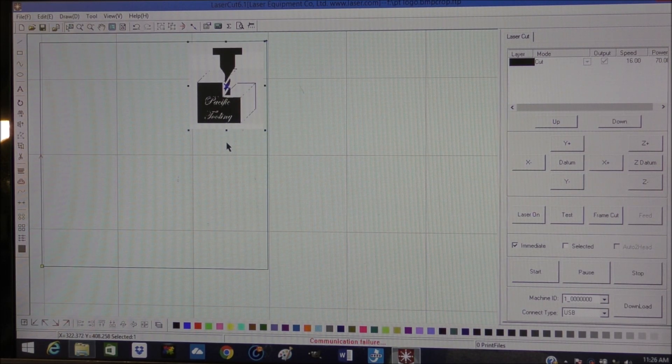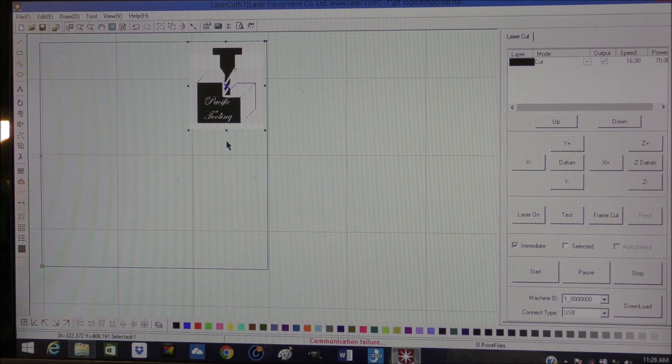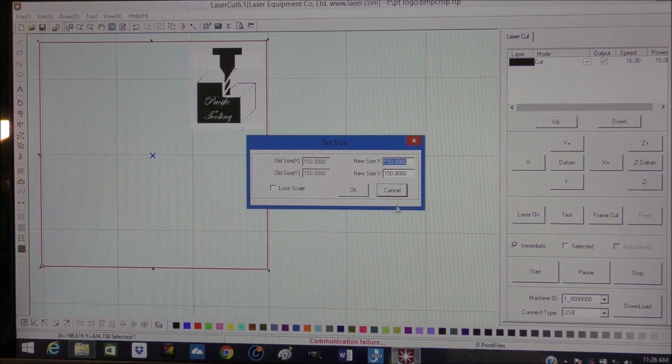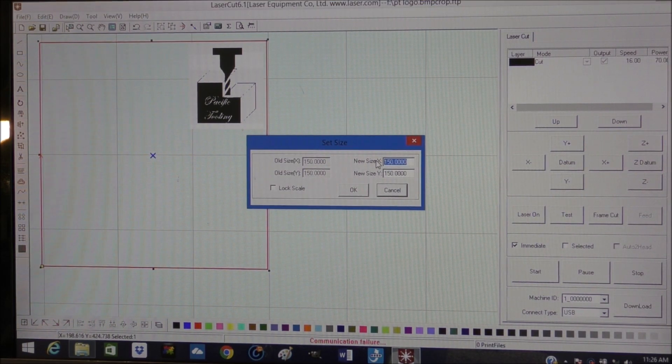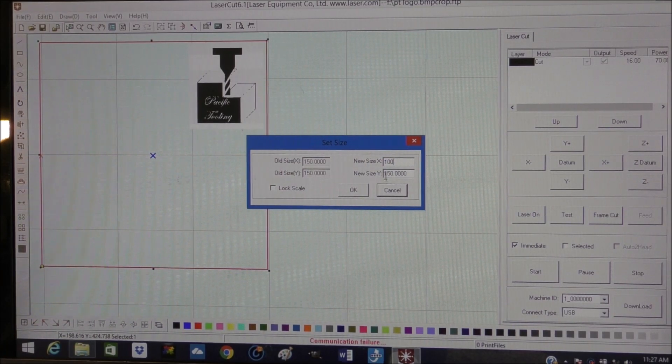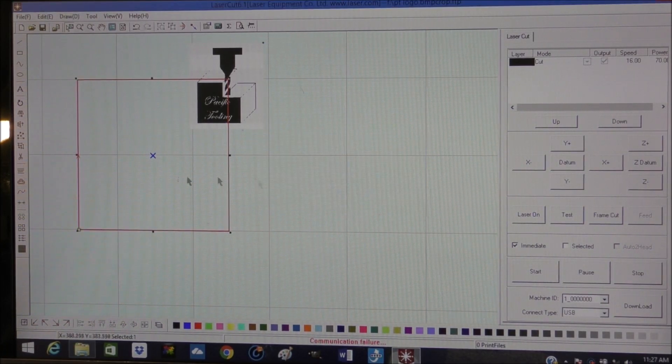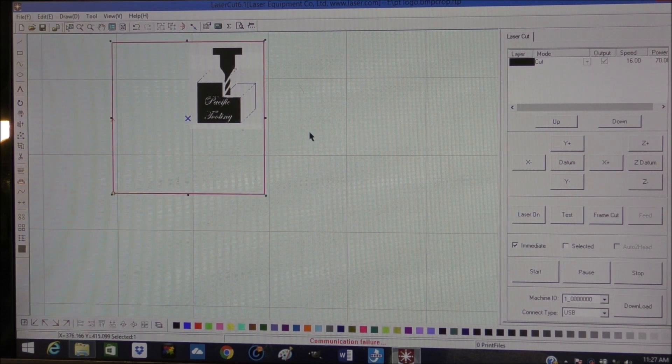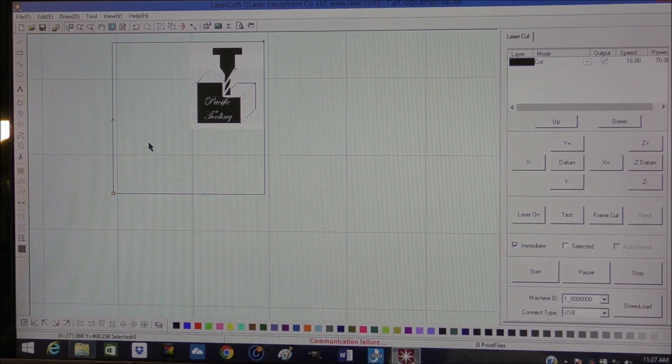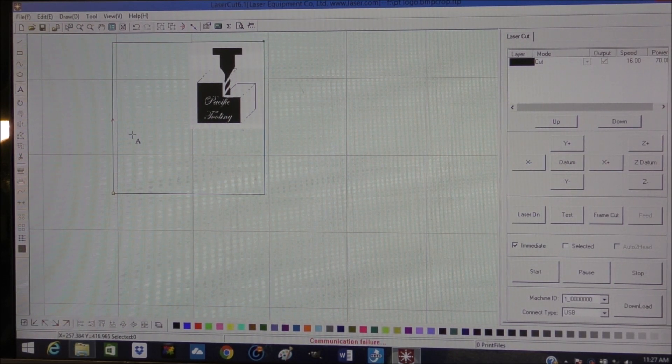What I'm doing now actually is I'm going to resize the work area that I have to work in. So I'm just resizing the work area box there, and I'm going to make it 100 by 100 millimeters—that's four inches by four inches.